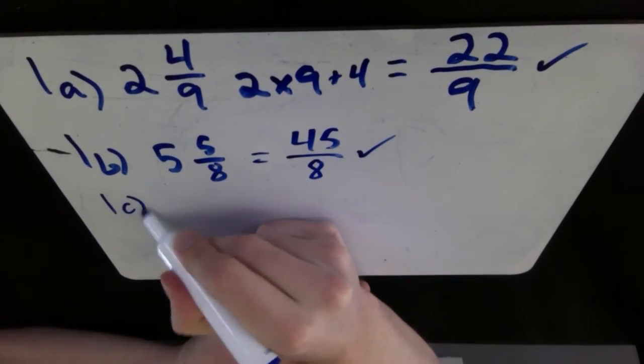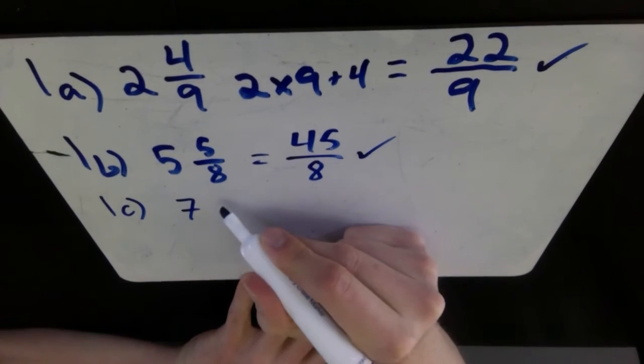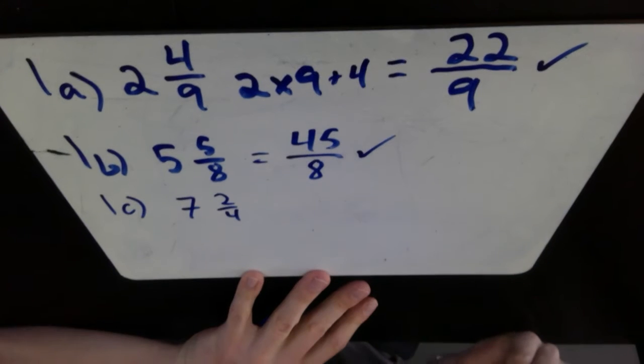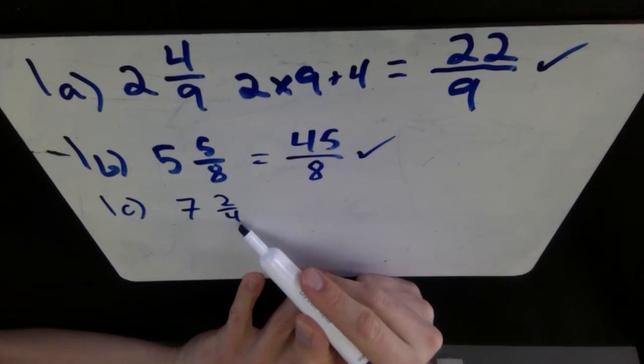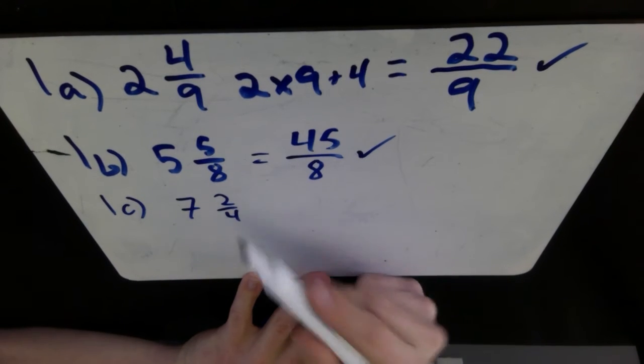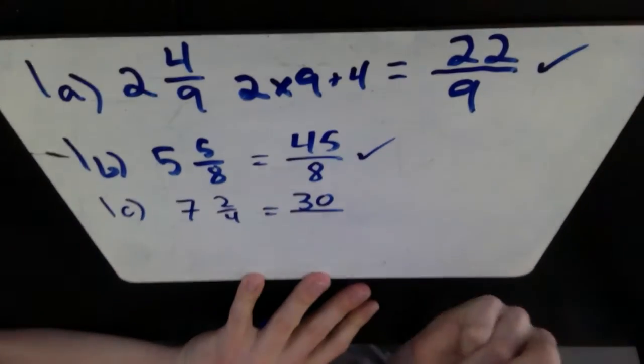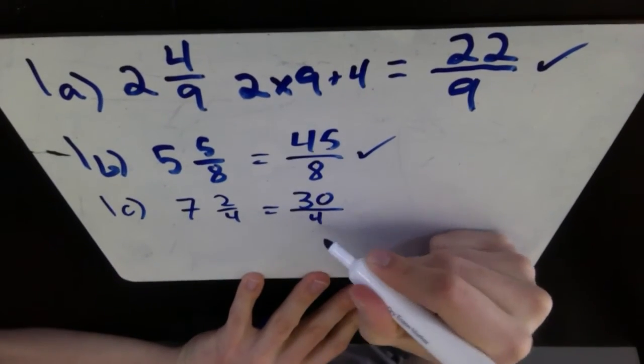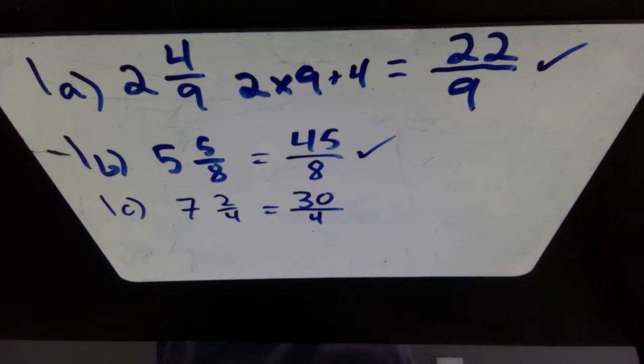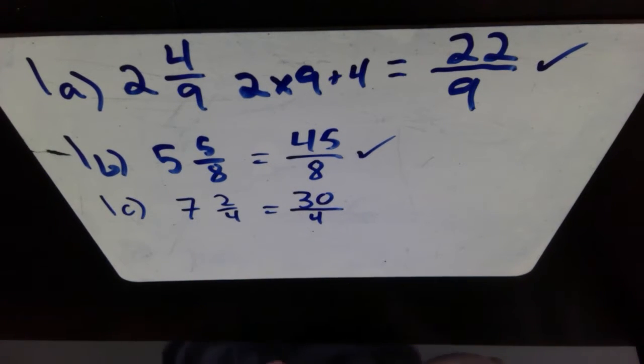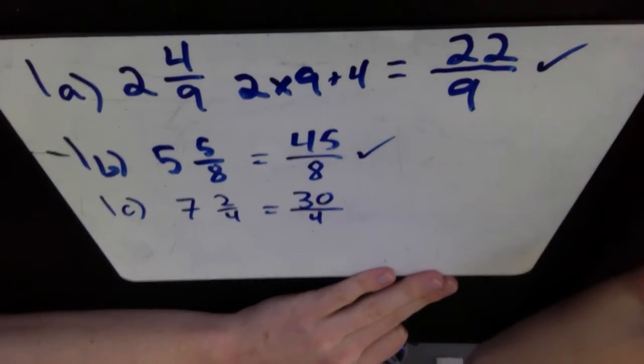1C. We have 7 and 2 over 4. Looking at this, 7 multiplied by our denominator 4. So 7 times 4 is 28, plus 2 is 30, over keep our denominator the same as 4. I'm just going to pause for a sec there, though. Because the second part of this question says in simplest form.